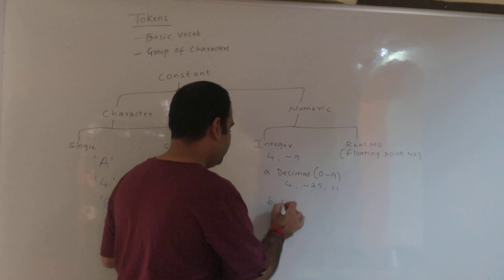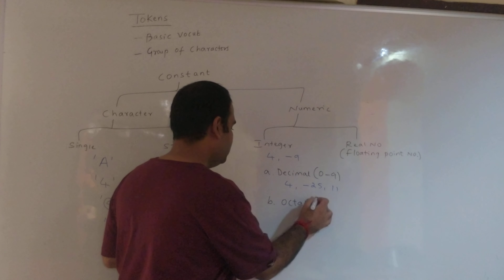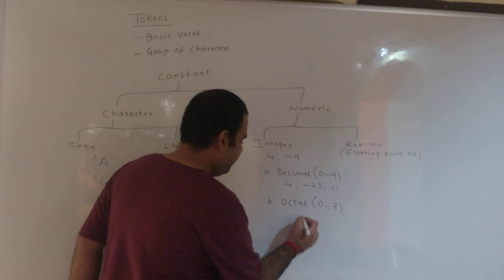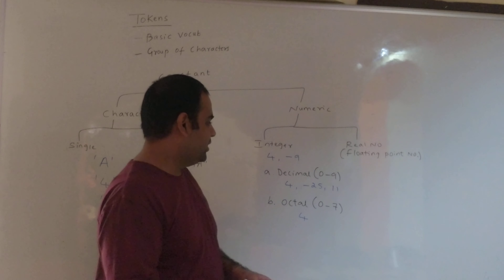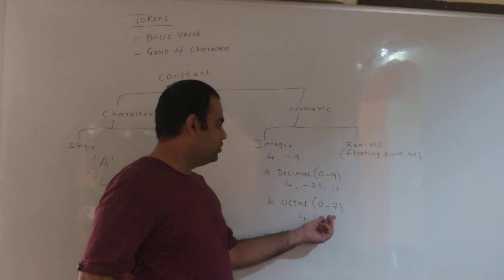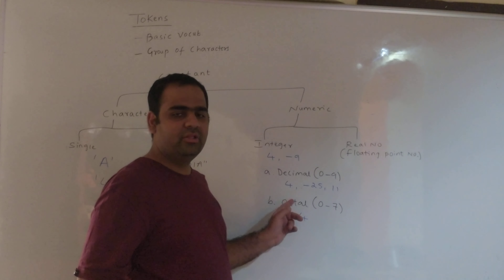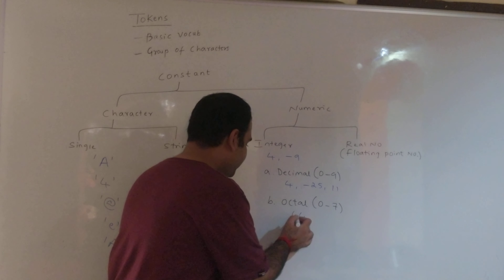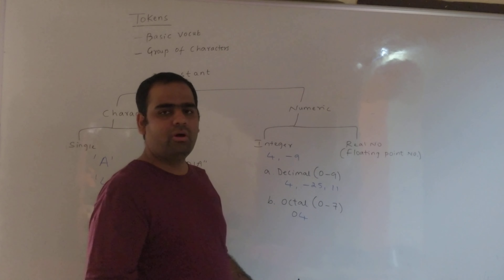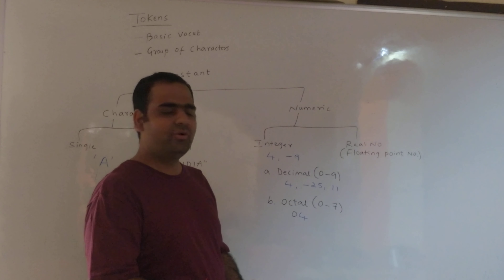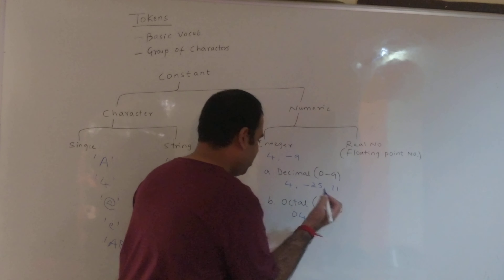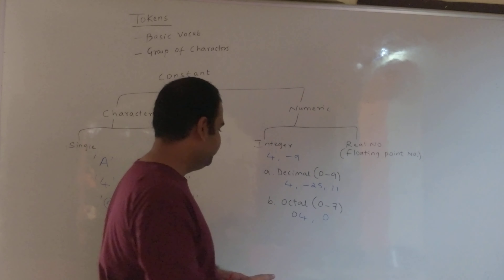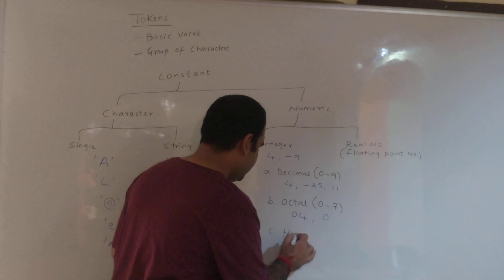The second type is octal. Octal is base 8 — all digits should be between 0 and 7. Now if we write 4, the question is: is it decimal or octal, since 4 is valid in both? To distinguish, octal numbers are prefixed with 0. Therefore, an octal number starts with 0. The question also arises whether 0 itself is decimal or octal — by definition, 0 is octal in C.